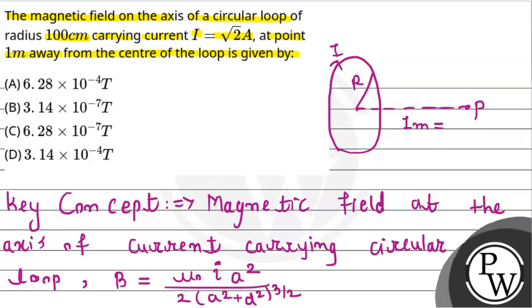Here, d is indicating the distance, and a is indicating the radius, I is the current, and μ₀ is the magnetic permeability. Now let's substitute all the values.